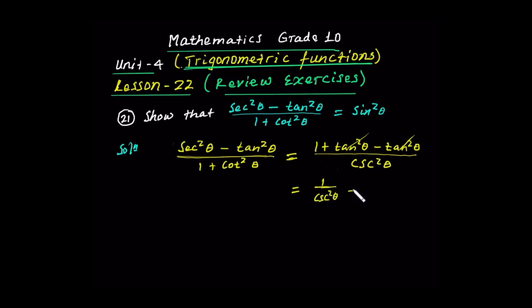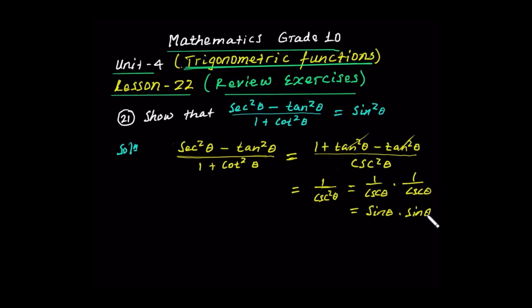This is what we have to do. 1 over cos theta times 1 over cos theta. Cos squared theta times cos theta. This is sin theta times sin theta. Sin theta times sin theta is sin squared theta.